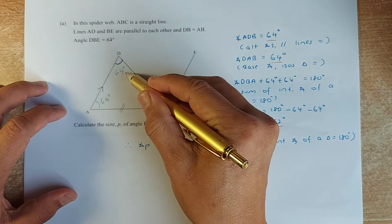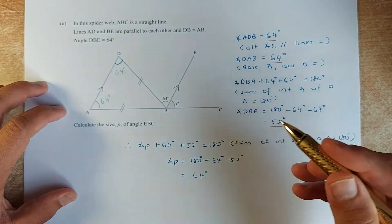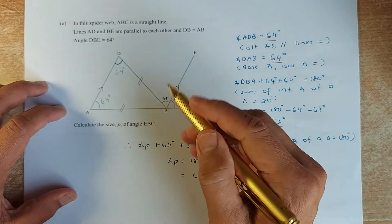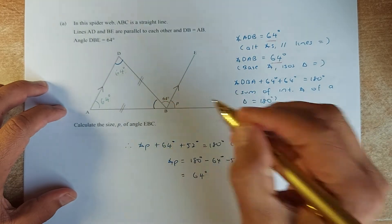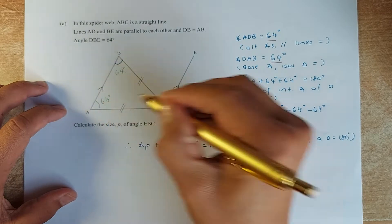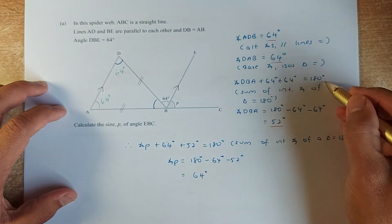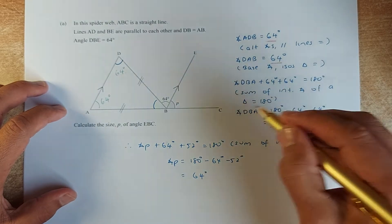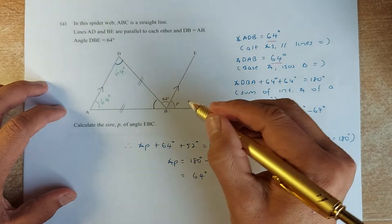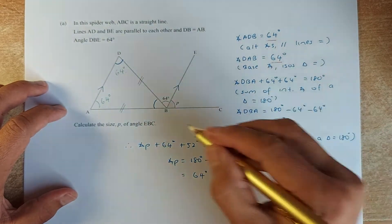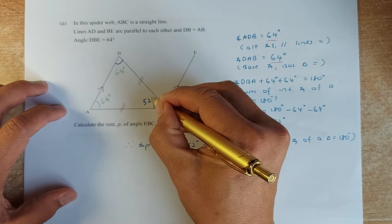Now that we know angle ADB is 64 and angle DAB is 64, we can calculate angle DBA. Because angle DBA plus 64 plus 64 equals 180, since the interior angles of a triangle add up to 180. So angle DBA equals 180 minus 64 minus 64, which gives 52 degrees.